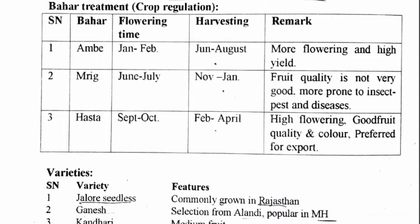Ambe bahaar: flowering happens in January and February, and harvesting is done in June-August. Summer flowering is more and yield is also good, that's why growers prefer this season. Mirig bahaar: flowering time is June-July and harvesting is done in November-January. Quality in Mirig bahaar is not very good and it is highly prone to insect pests and diseases, so it is not preferred.